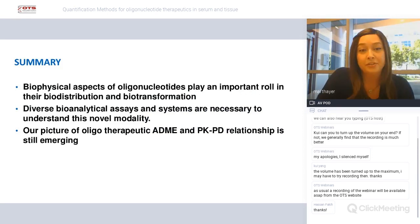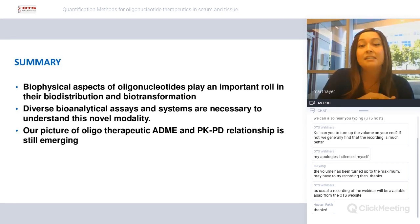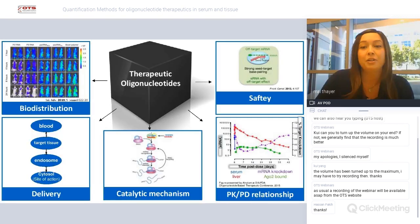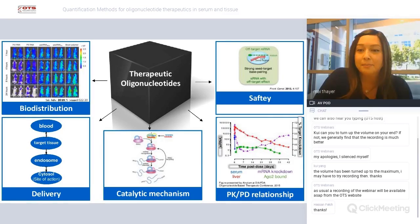In summary, biophysical aspects of oligonucleotides play an important role in their biodistribution and biotransformation. We definitely need diverse bioanalytical assays and systems to understand this novel modality. Our picture of ADME — absorption, distribution, metabolism, and elimination — and the pharmacodynamic and pharmacokinetic relationship is still emerging for these molecules. We still have a black box of unknowns with these therapeutic oligonucleotides, and we should dive deeper into these topics to see what information we can glean, because anything we find plays into molecule safety and efficacy.